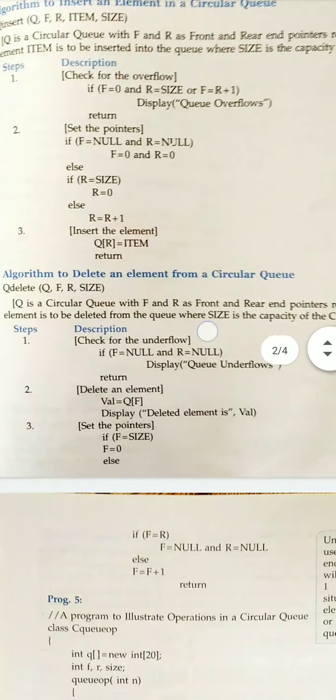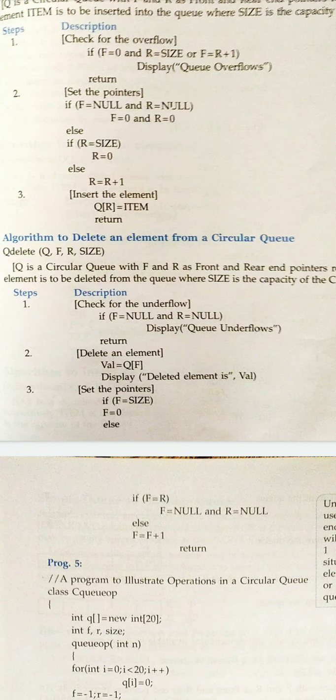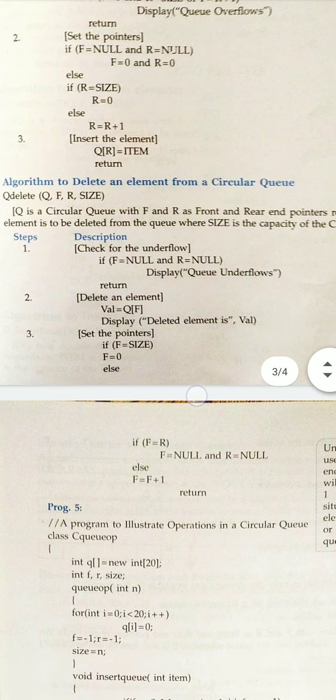And similarly for deletion, you have to check once the front pointer, once the front end reaches the rear end, you have to make the queue is empty and you should also, when it reaches the size, you have to change the front pointer equal to 0. These two condition checking is different as compared to queue.